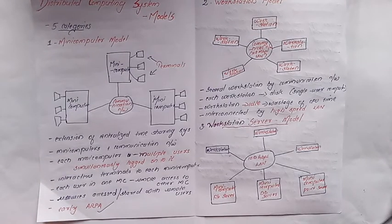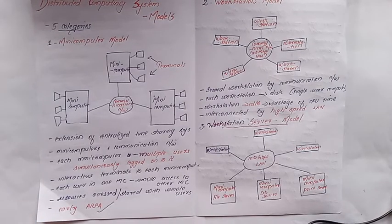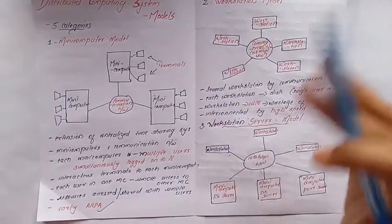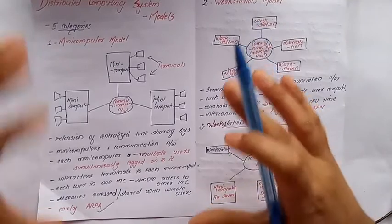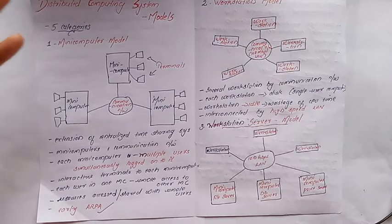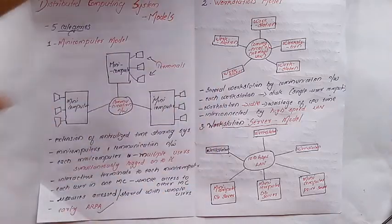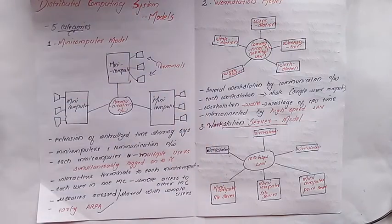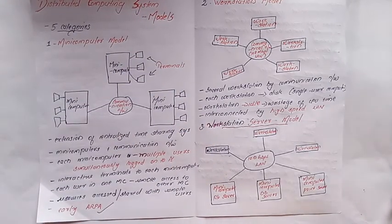This is the early ARPAnet. There are 4 universities and 4 computers connected. Communication is possible between them. The universities can also share and access resources.